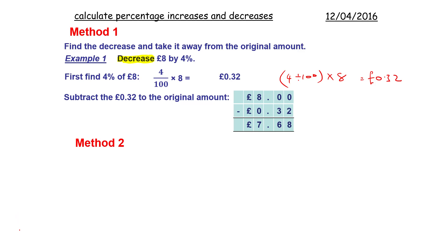Now we're going to look at the multiplier method, much more efficient. Same question, decrease eight pounds by four percent. So we find the multiplier for a four percent decrease, so it's going to be 100 percent take away four this time, and it gives us 96. What's 96 as a multiplier? 0.96.